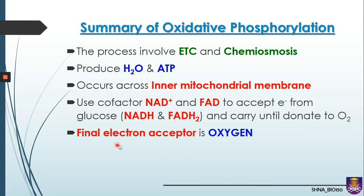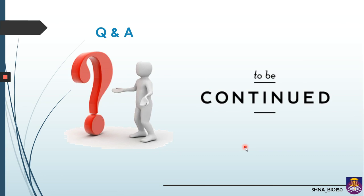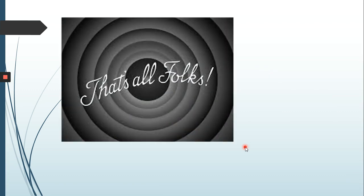Remember, the final electron acceptor for this process is oxygen. That's all for this topic. If you have any questions, you may ask your lecturer for further explanation and discussion. I hope all of you enjoy learning about aerobic cellular respiration. The next topic will be explained by Ms. Sarah. Thank you, bye-bye.